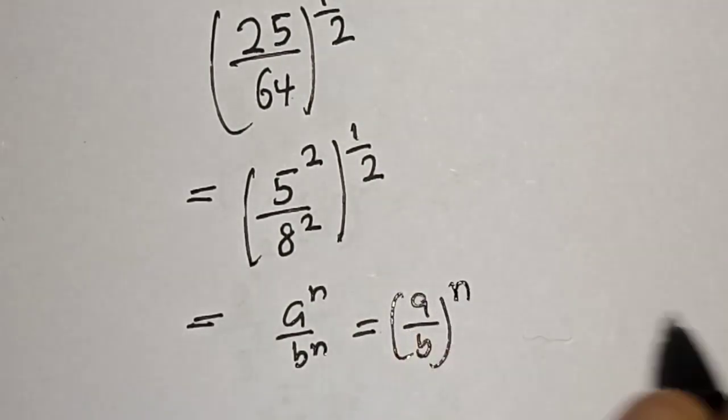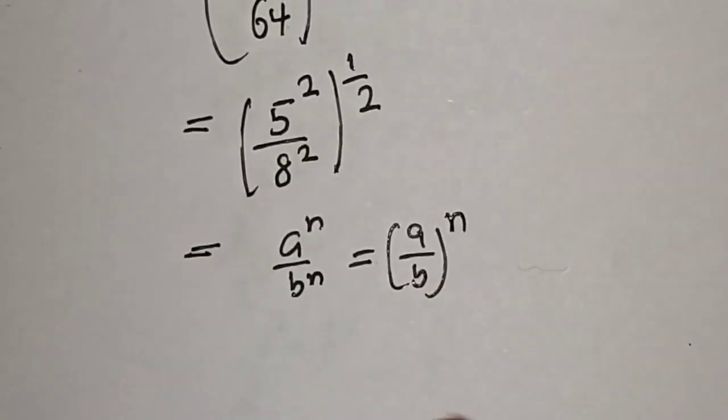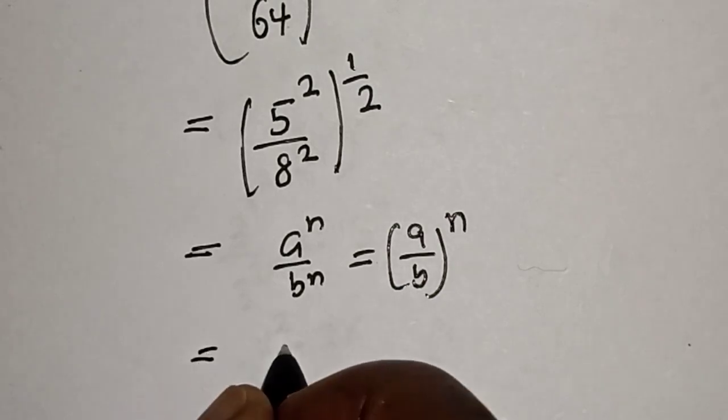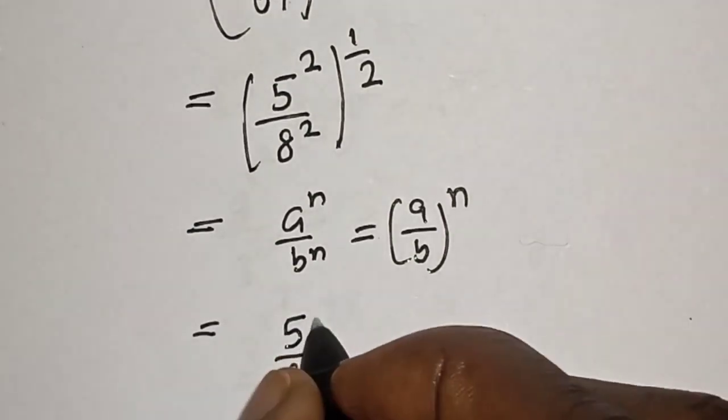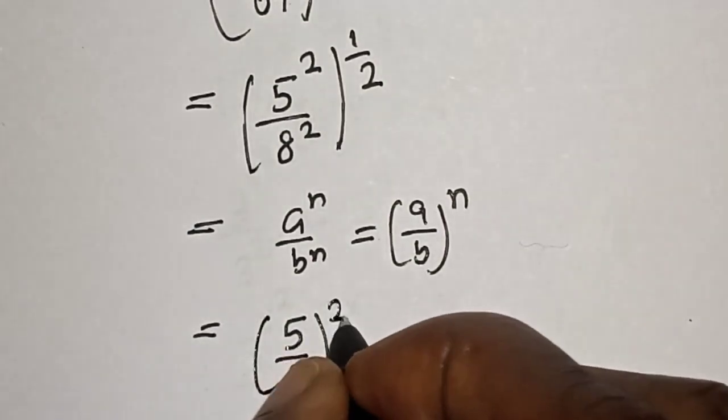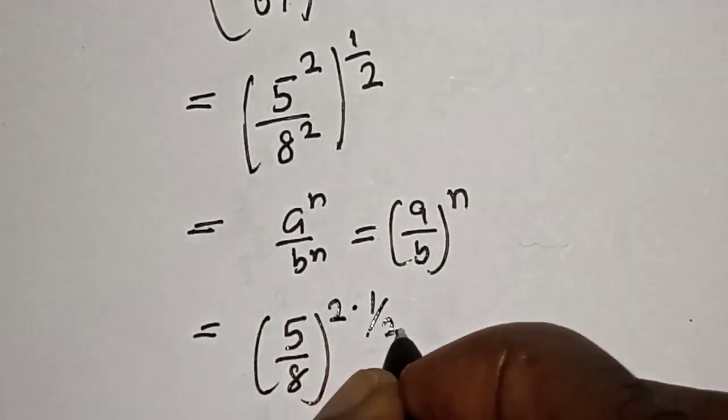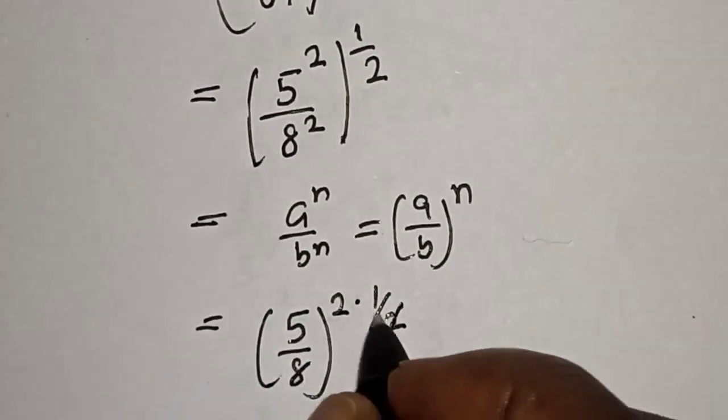Then this is (5/8) squared, multiplied by 1 over 2. The exponents multiply and cancel, giving us 5 over 8.